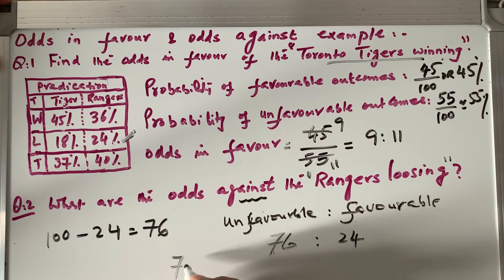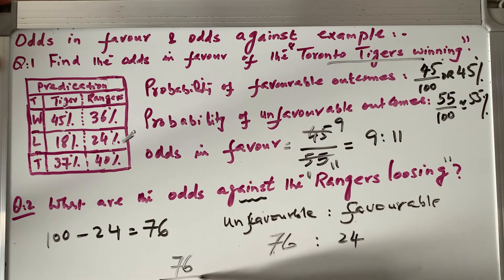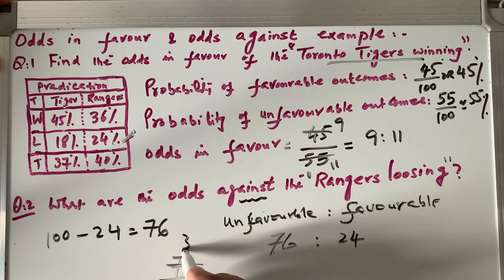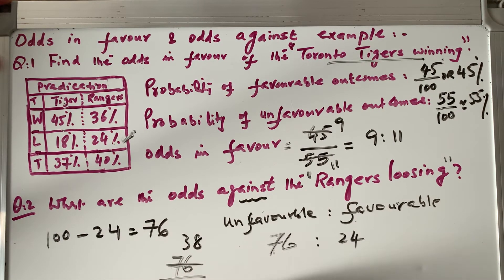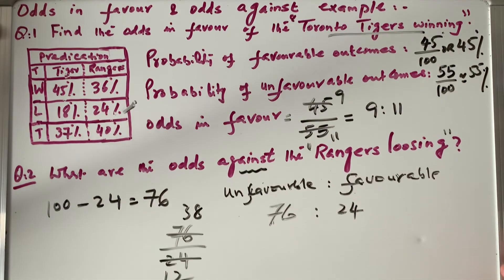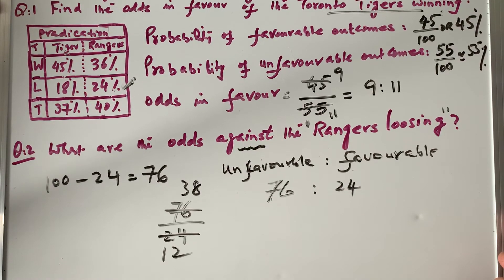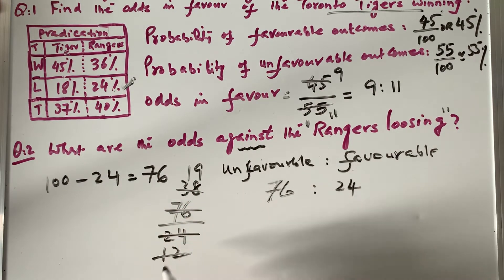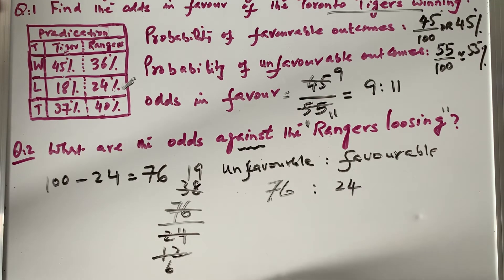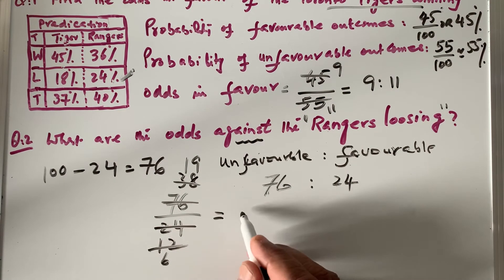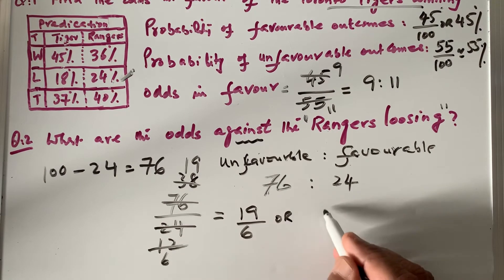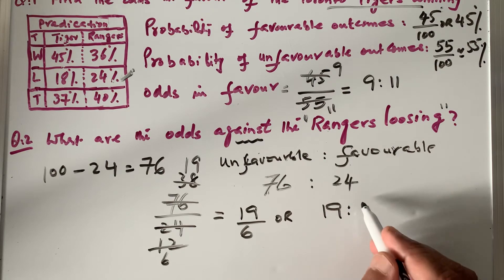To put it into simplified ratio form, we divide: 76 and 24 share a common factor. Working through: 19 times 4 is 76, and 6 times 4 is 24. So the simplified ratio is 19 to 6.